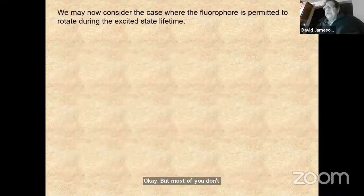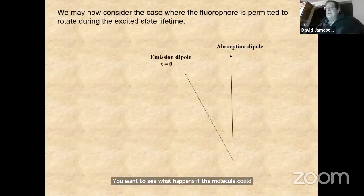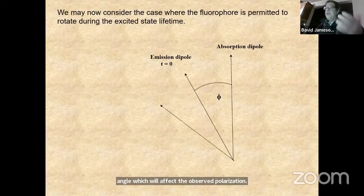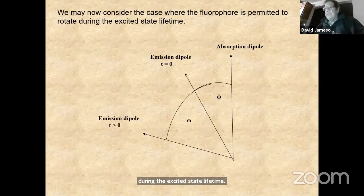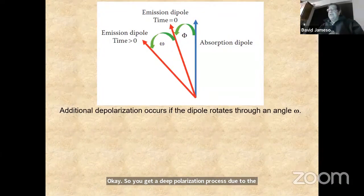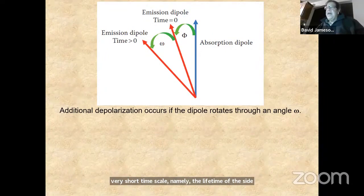Most of us don't want to do polarization on frozen molecules — we want to see what happens if the molecule can rotate. You have an absorption dipole lined up, selecting those molecules. Instead of frozen, we allow the molecule to rotate during the excited state lifetime. When it emits light, it has passed through a certain angle, giving a depolarization process due to rotation. This allows you to study molecular motions during very short timescales, namely the nanosecond lifetime of the excited state.